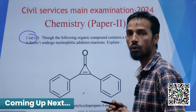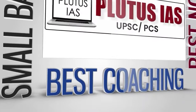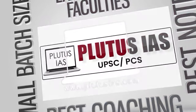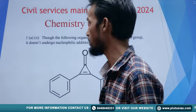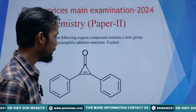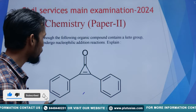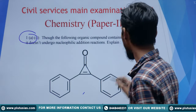Hello everyone, welcome back to Plutus IAS. Today we are going to discuss the UPSC Chemistry Optional 2024 exam questions. Here is the question: we are given an organic compound whose name is 1,2-diphenylcyclopropenone, and in the question it is given that this compound contains a keto group.